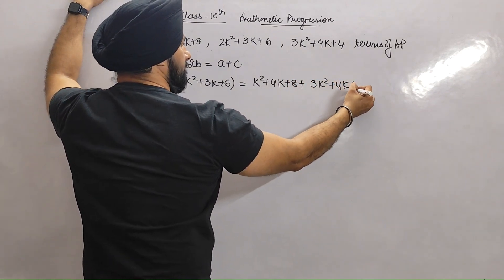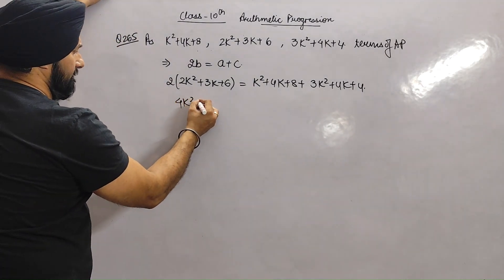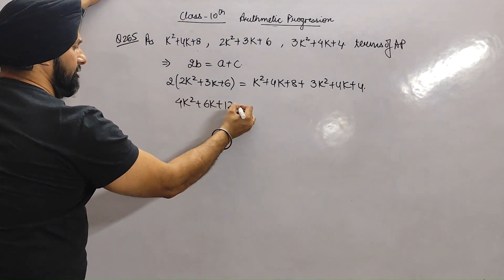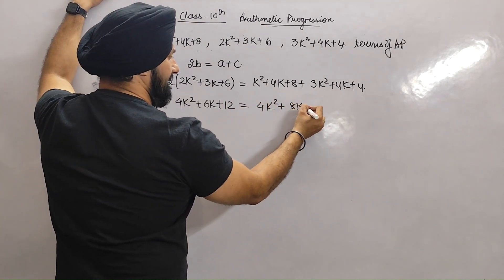Multiply: 4K square plus 6K plus 12. Right side becomes 4K square plus 8K plus 12.